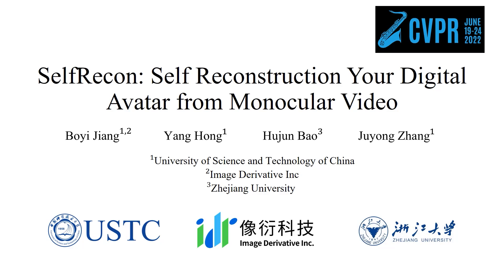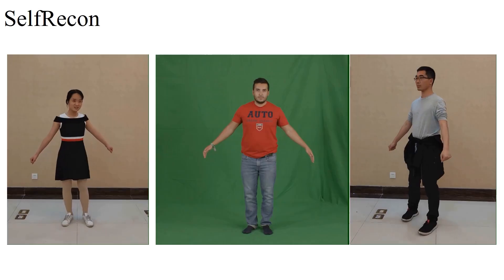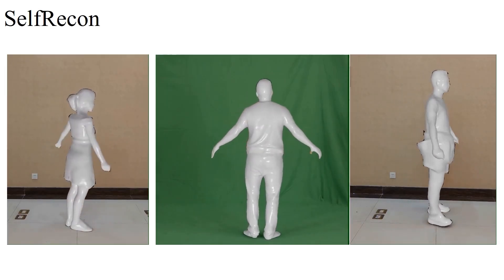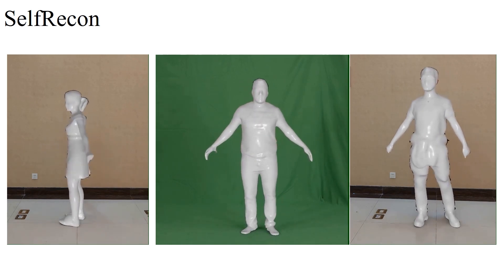In this work, we propose a novel monocular human reconstruction method, Self-Recon. It can recover the high-fidelity human shape, including loose garments, from a monocular video depicting a self-rotating person.